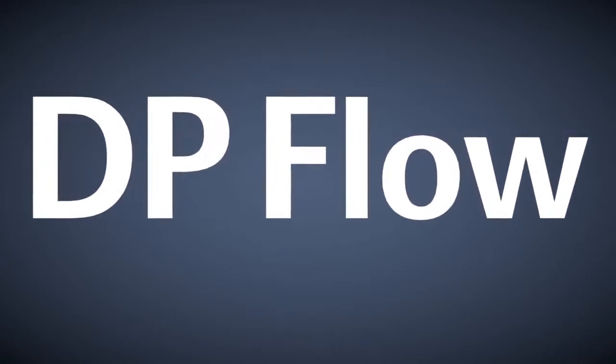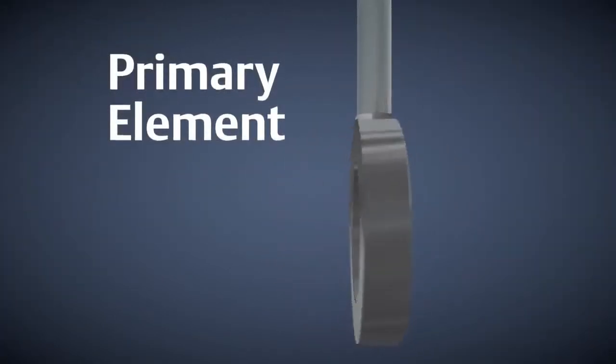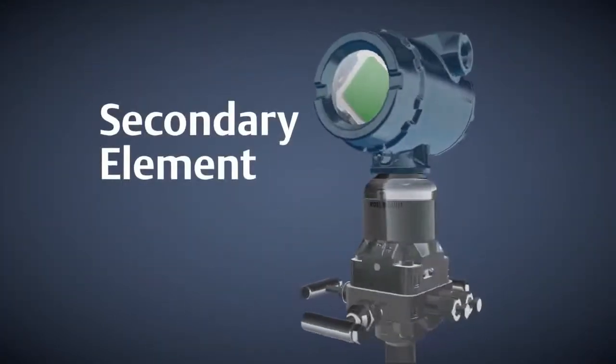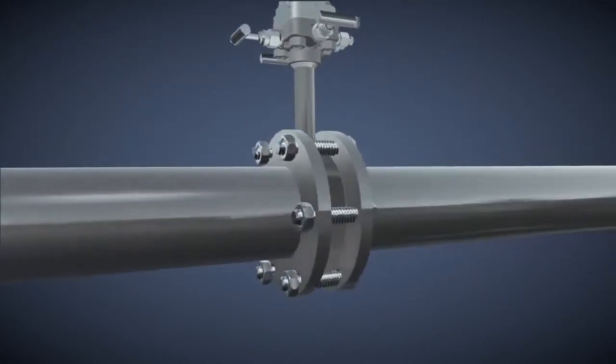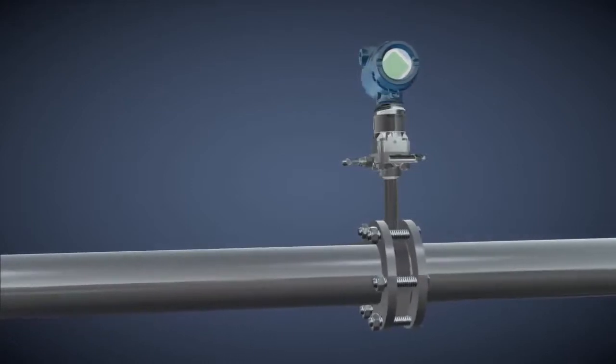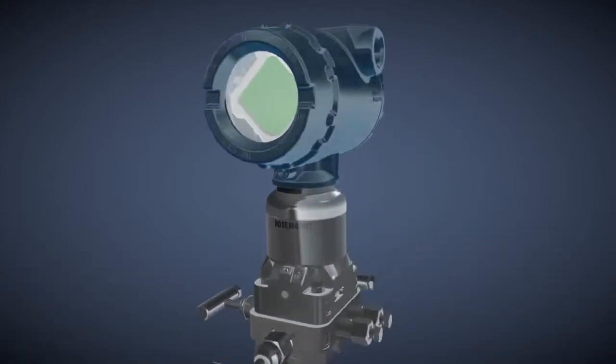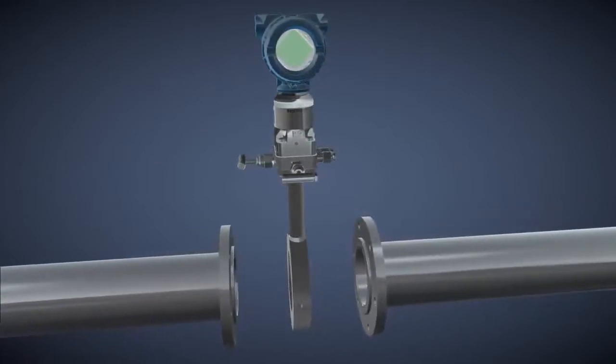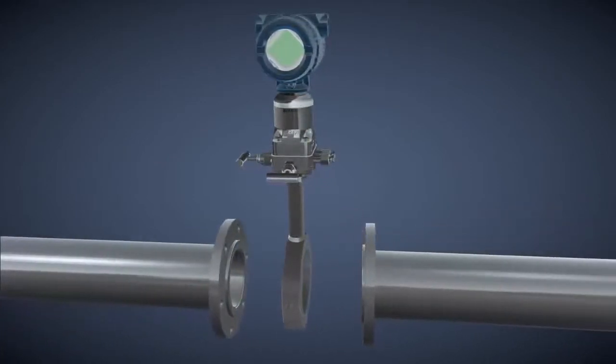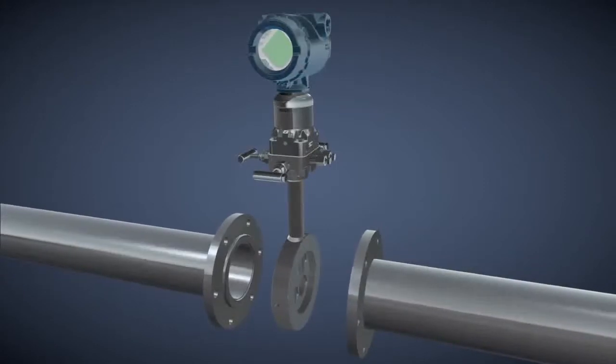DP flow is measured with a combination of a primary element and a secondary element. A primary element is placed in the pipe to create a differential pressure while connecting the secondary element to the process. The secondary element, or transmitter, takes measurements from the primary element and converts them into useful quantitative values and transmits those values to a control system.